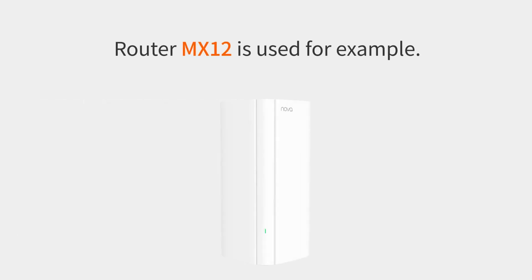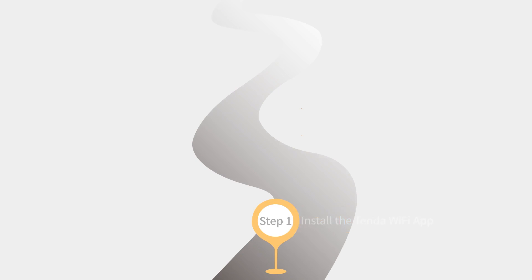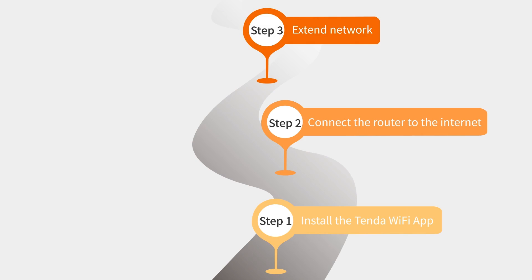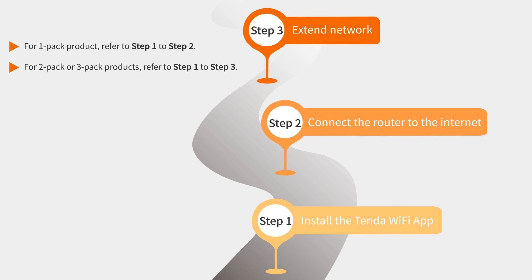Router MX12 is used as an example. Step one: install the Tenda WiFi app. Step two: connect the router to the internet. Step three: extend the network. For a one-pack product, refer to steps one and two. For two-pack or three-pack products, refer to steps one through three.